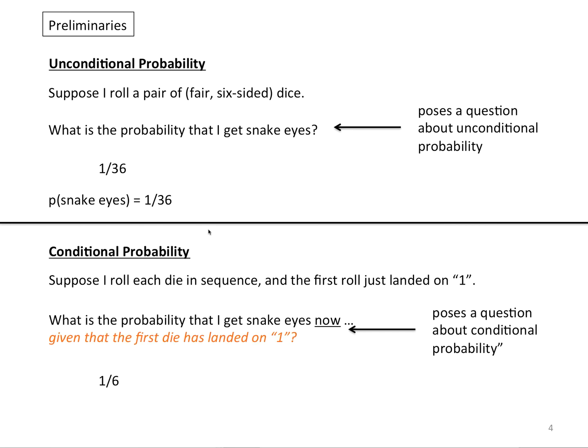Now turn to conditional probability. Suppose I roll each die in sequence and the first just landed on 1. What is the probability that I get snake eyes now, given that the first die has landed on 1? This poses a question about conditional probability.